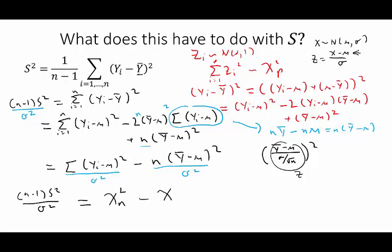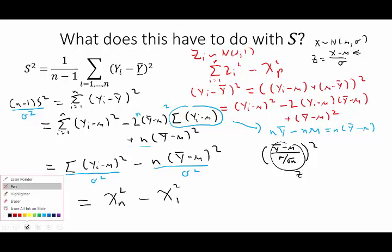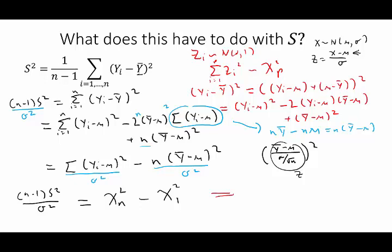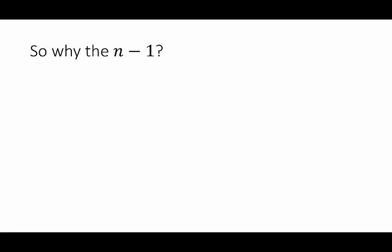We end up with a difference of two chi-squareds. It turns out that s-squared and that chi-squared with 1 degree of freedom are independent of each other — we'll show that in a later video. Therefore, using our sum of gamma random variables fact, we can conclude that (n-1)s²/σ² is chi-squared with n minus 1 degrees of freedom. This last fact is actually the answer to the age-old question of why the n minus 1 appears: it creeps up because this quantity is chi-squared with n minus 1 degrees of freedom.